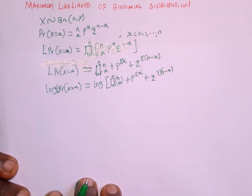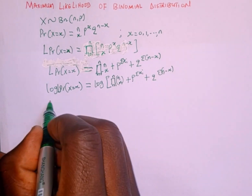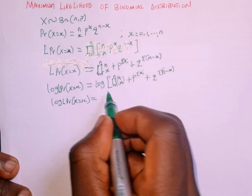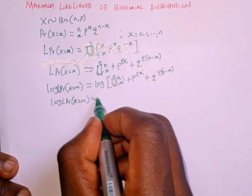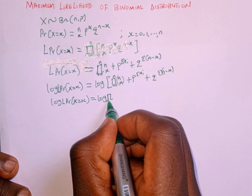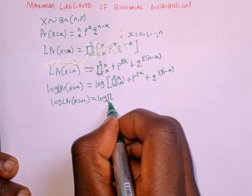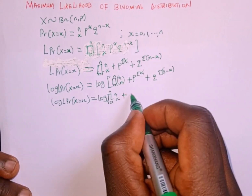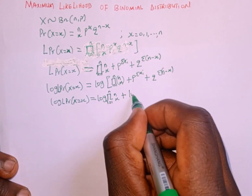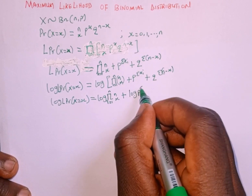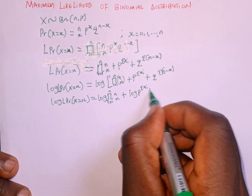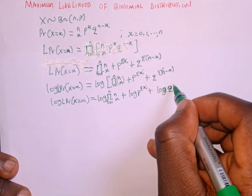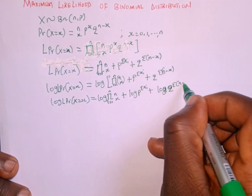Next is to simplify. The log of the likelihood of P(X = x) equals the log of the product from i = 1 to n of n-combination-x, plus the log of p raised to the power of summation of x_i, plus the log of q raised to the power of summation of n minus x.